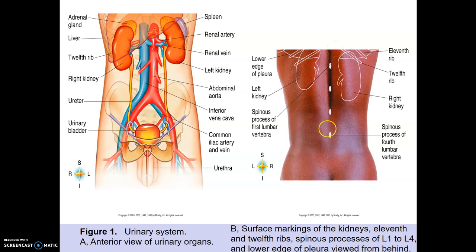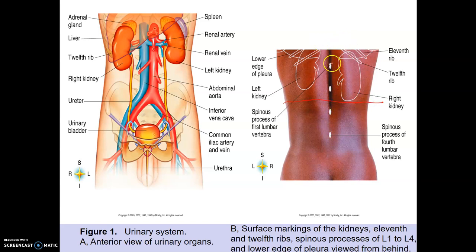Here's the spinous process. Lumbar 4 is all the way down, but here's lumbar 1, lumbar 2 — the kidneys are basically above lumbar 1 and extending down between lumbar 2 and 3.